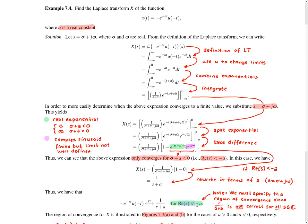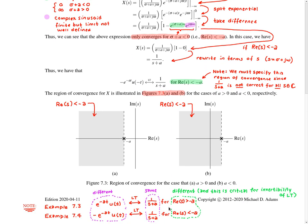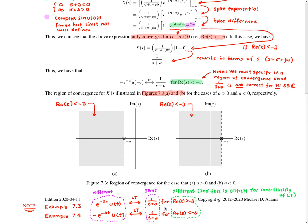The condition that the real part of s is less than −a is a fundamental part of the answer, referred to as the region of convergence. This constrains for what values of s the expression 1/(s + a) is valid. The last part of the solution illustrates the region of convergence: with a > 0 in figure A on the left, and a < 0 in figure B on the right.